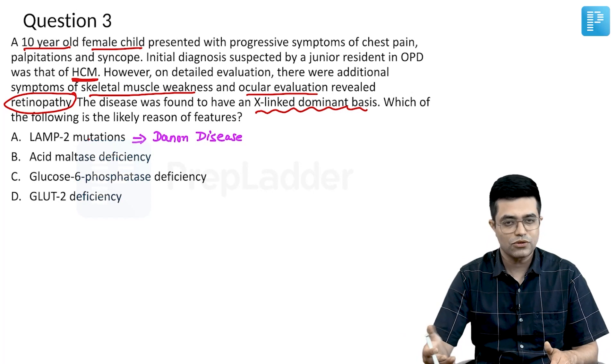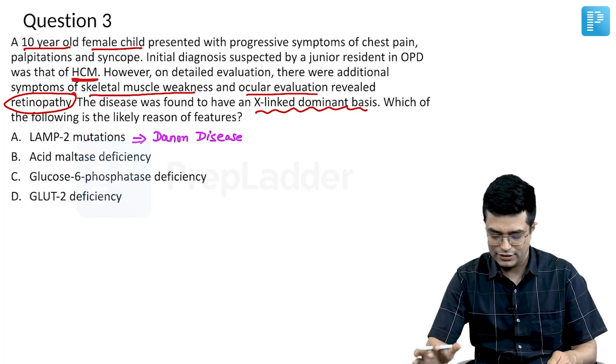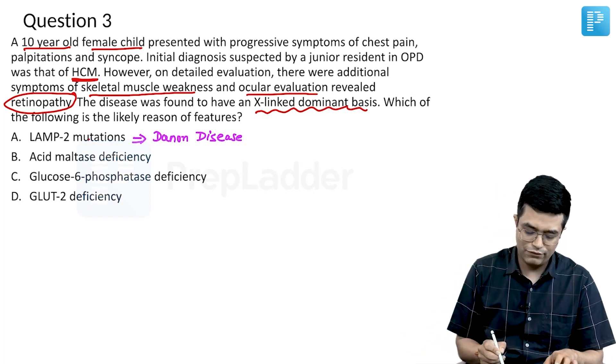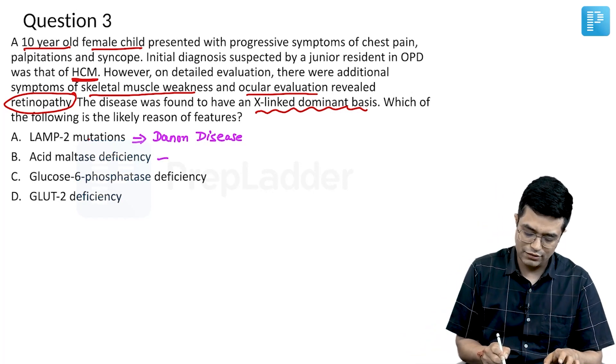If you look at the Nelson table, they mention Danon disease there as well. Option B, acid maltase deficiency, is nothing but Pompe disease, or type 2 glycogen storage disease.